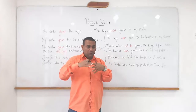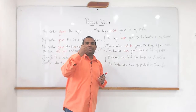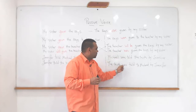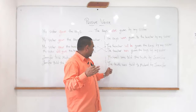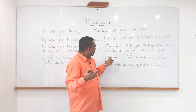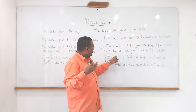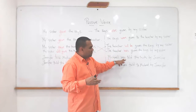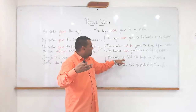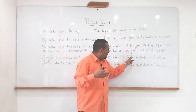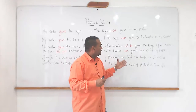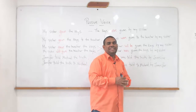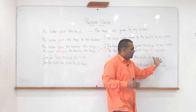The agreement is perfect all the time. 'The teacher was given' — the teacher is the subject. 'The truth was told' — the truth is the subject. Michael is the subject. 'Was' is present, taking into account that this is past, followed by the past participle of the verb, then the direct complement — the keys and the truth — and finally the agent complement: by my sister and by Jennifer.